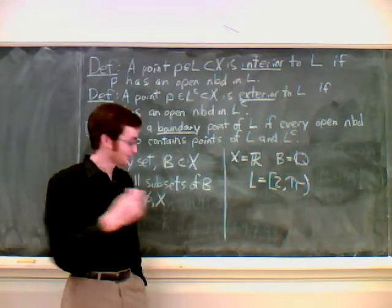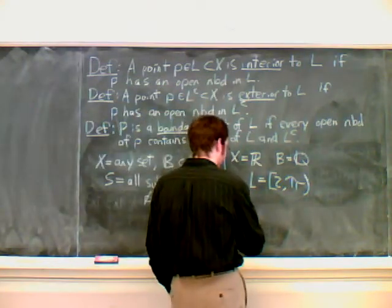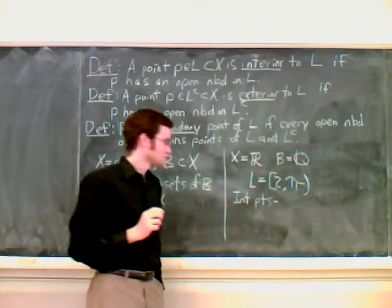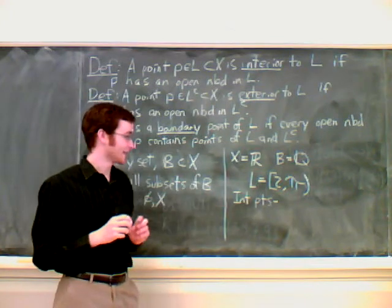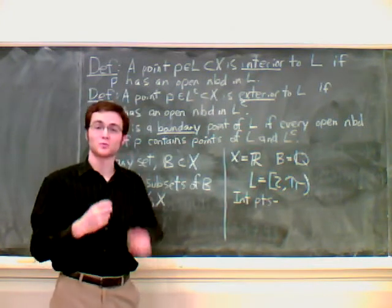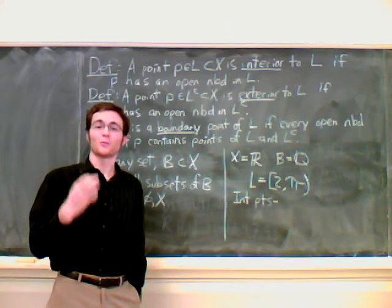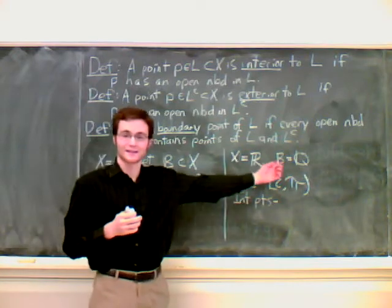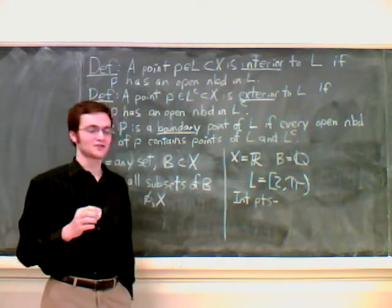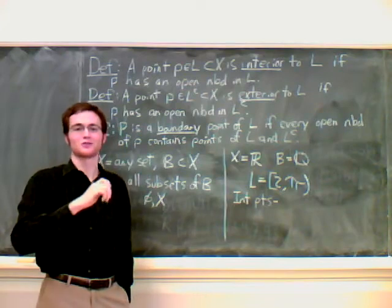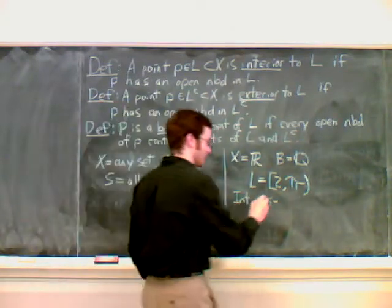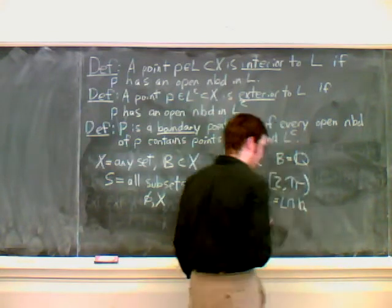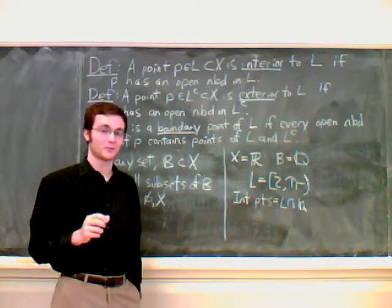Let's cook up a specific L. Say L is [2,π). Let's consider the interior points. Consider a rational point inside this set, say 2. The set {2} itself is an open set because it's a set of rational points, a subset of B. So any rational point between 2 and π is going to be an interior point. We have L intersect the rational numbers as our interior points.